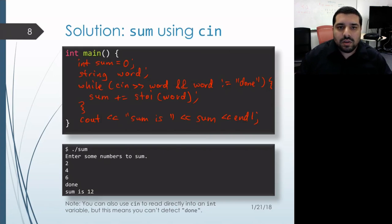And so the text two actually gets extracted to the string word and that word isn't equal to done. So we enter the body of the loop and call S2i on it, which converts it to the integer two, which then gets added to the sum, and so our sum becomes two.